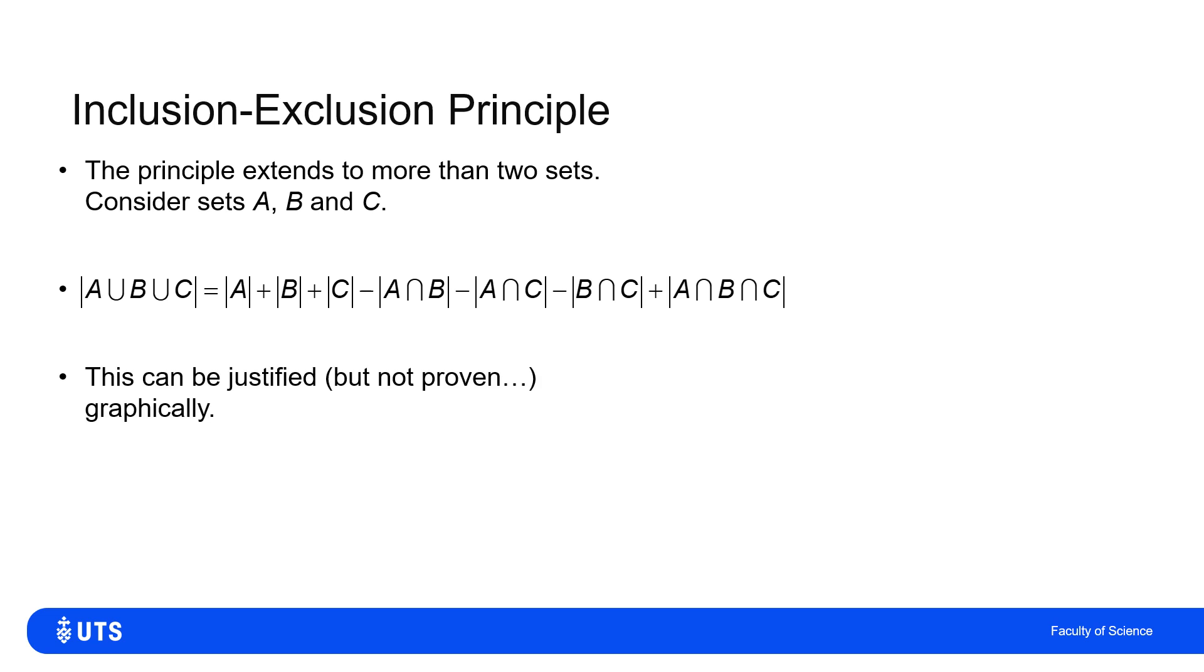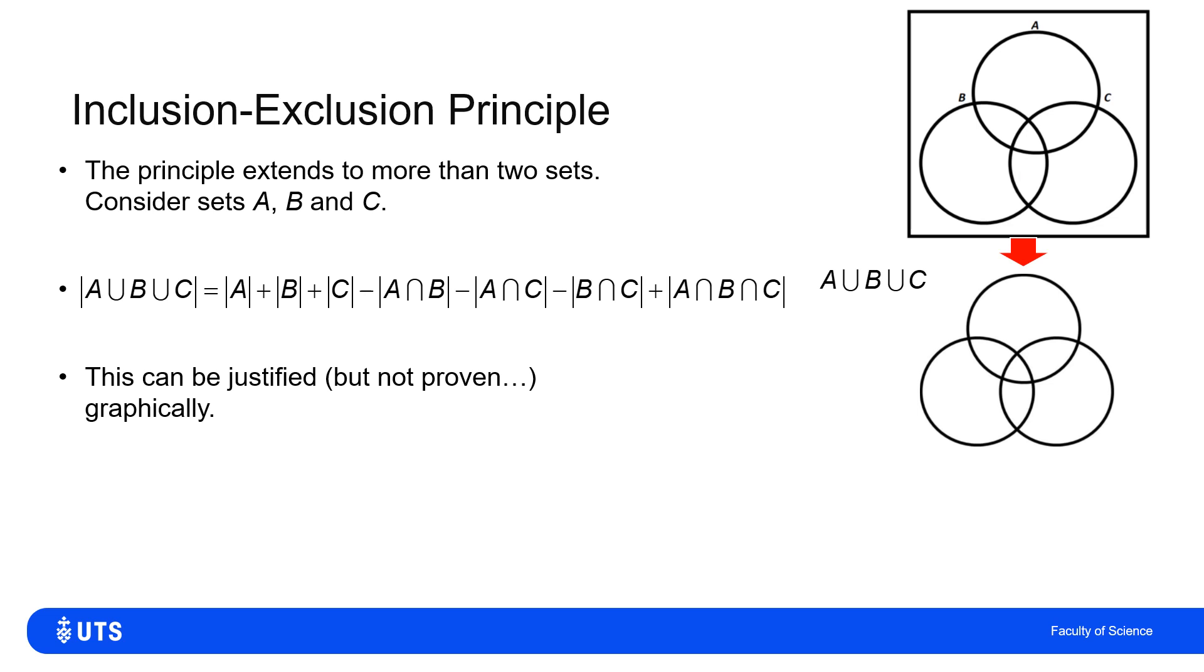Now, justifying that graphically can be done, just as I did before, but it gets a little bit messier and harder to see. Your mental jigsaw skills have to be higher level here. If I pull that apart, that's the part of A union B union C, the bit that's just inside those three circles. Now, if I pull that apart,